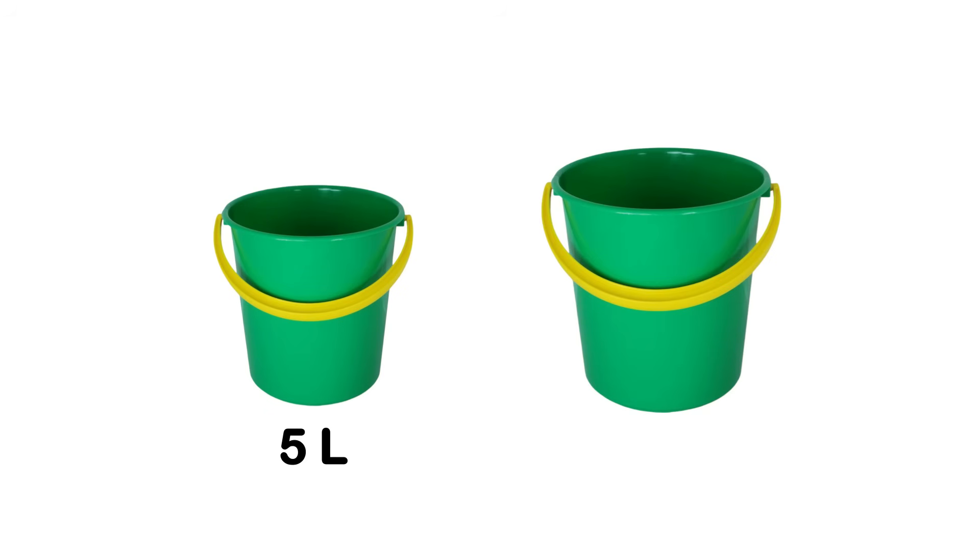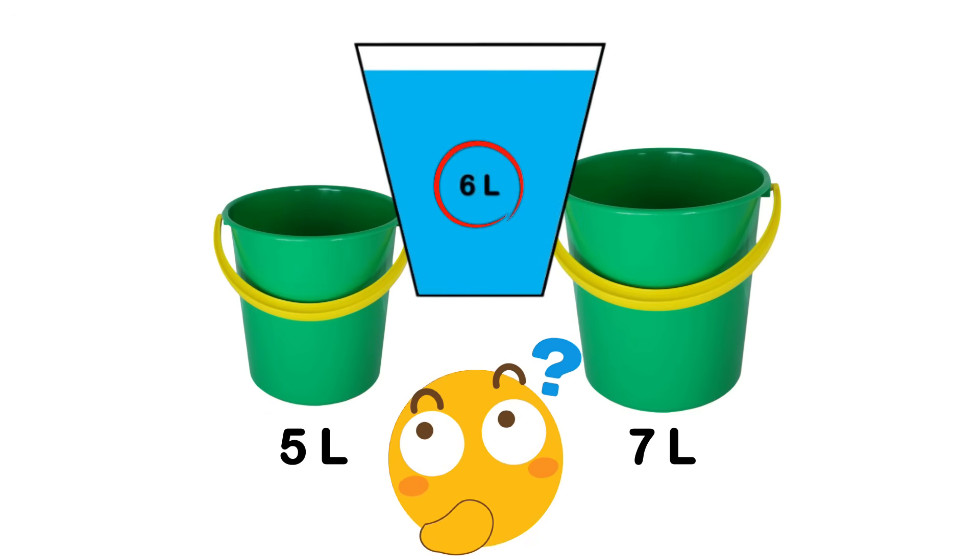If you only had two buckets, one 5-liter and one 7-liter, and no measurement markings at all, do you think it's really possible to get exactly 6 liters of water using just these two?